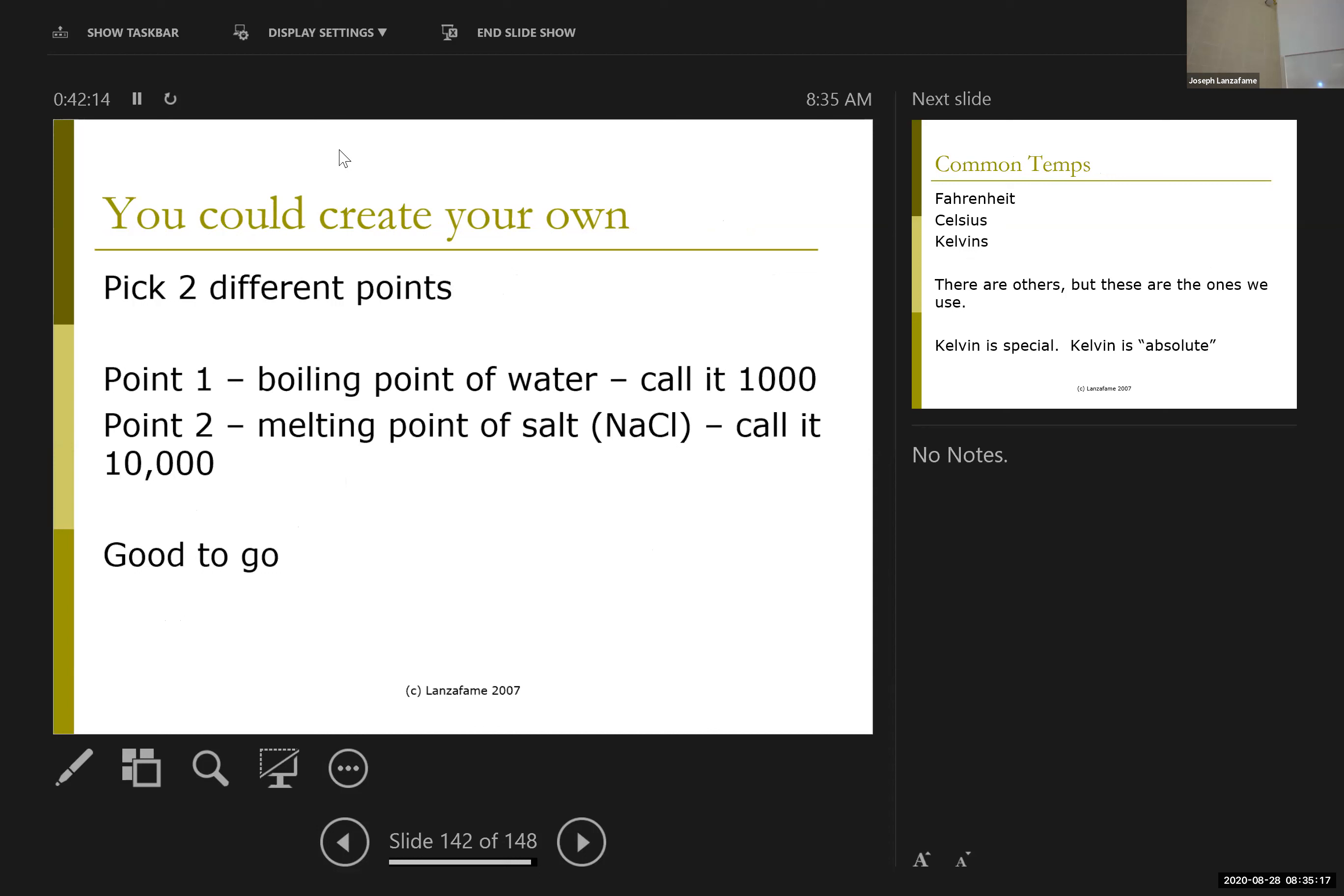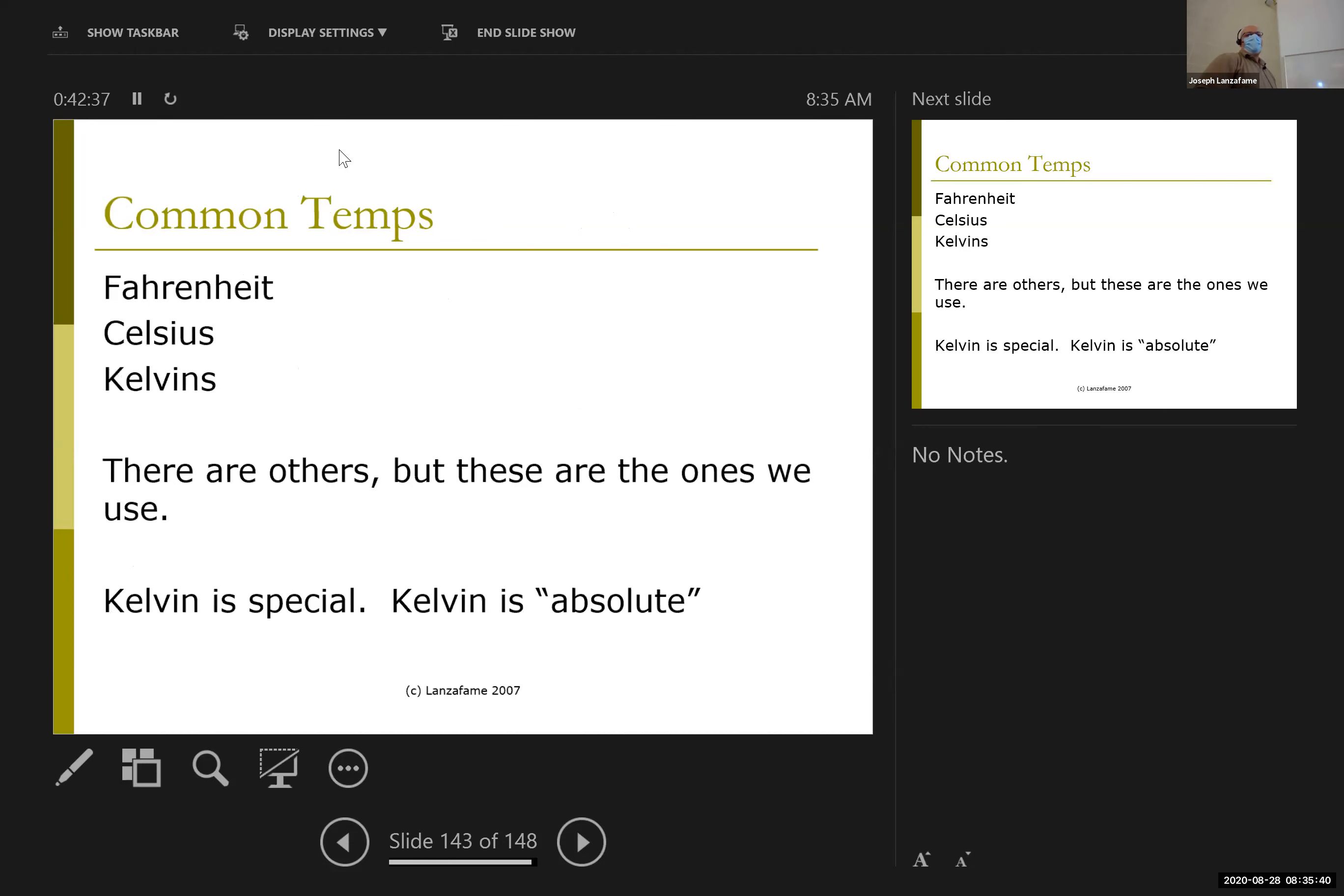Take the boiling point of water, call it 1000. Take the melting point of sodium chloride, call it 10,000. You have a temperature scale. And for most purposes, that's good enough. Because it allows me to see whether I am relatively more energetic or relatively less energetic.